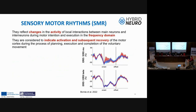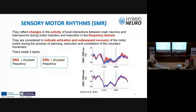Another type of average ERP is sensory motor rhythms. In this case, we use a filter bank to analyze the signal and observe it in the time domain. It is observed before, during, and after the movement, delimited in a narrow frequency band. The first plot shows the mu band and the second the beta band. They are called event-related desynchronization when the power of a frequency decreases, and event-related synchronization when it increases.